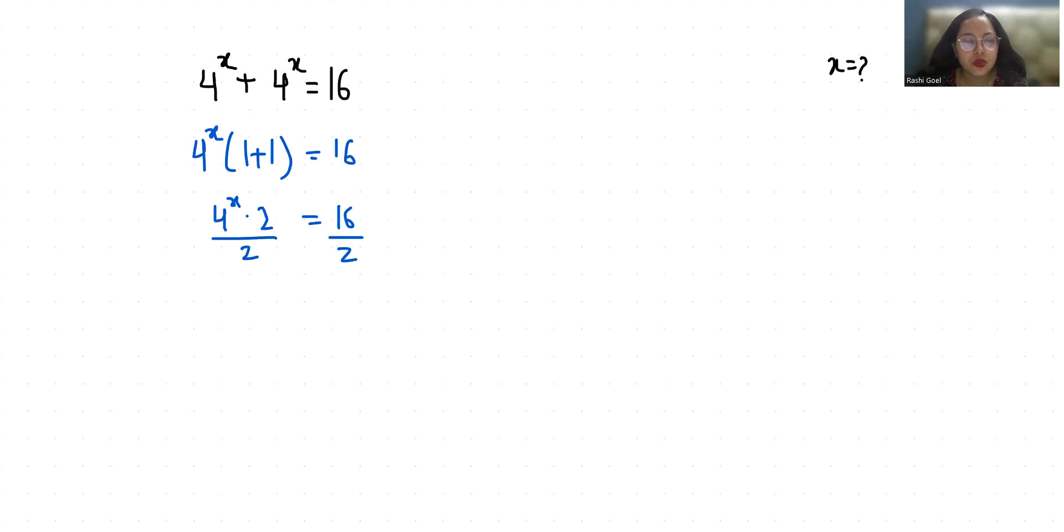So 4^x equals 8. Now if I take log on both sides, it becomes x log 4 equals log 8.